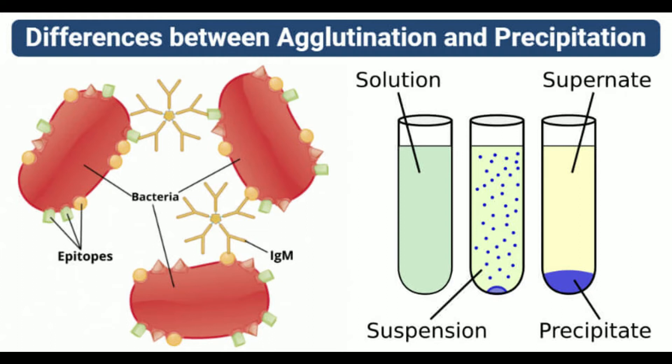For precipitation to take place, the antibody must be bivalent, and the antigen must be either bivalent or polyvalent. Precipitation takes place in a zone of equivalence where the concentration of antigen and antibody is equal. Precipitation doesn't occur if the concentration of either antigen or antibody is in excess or deficient.